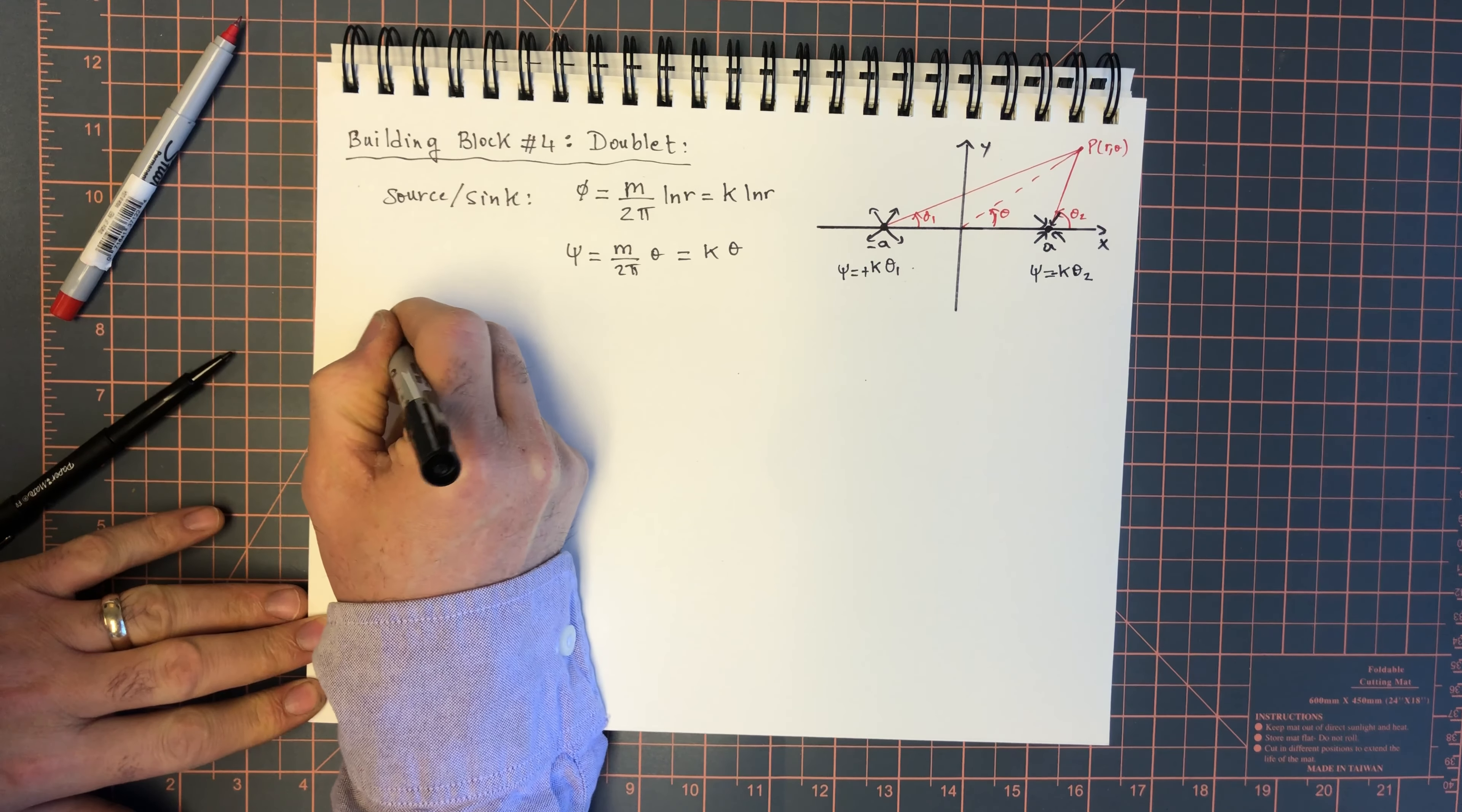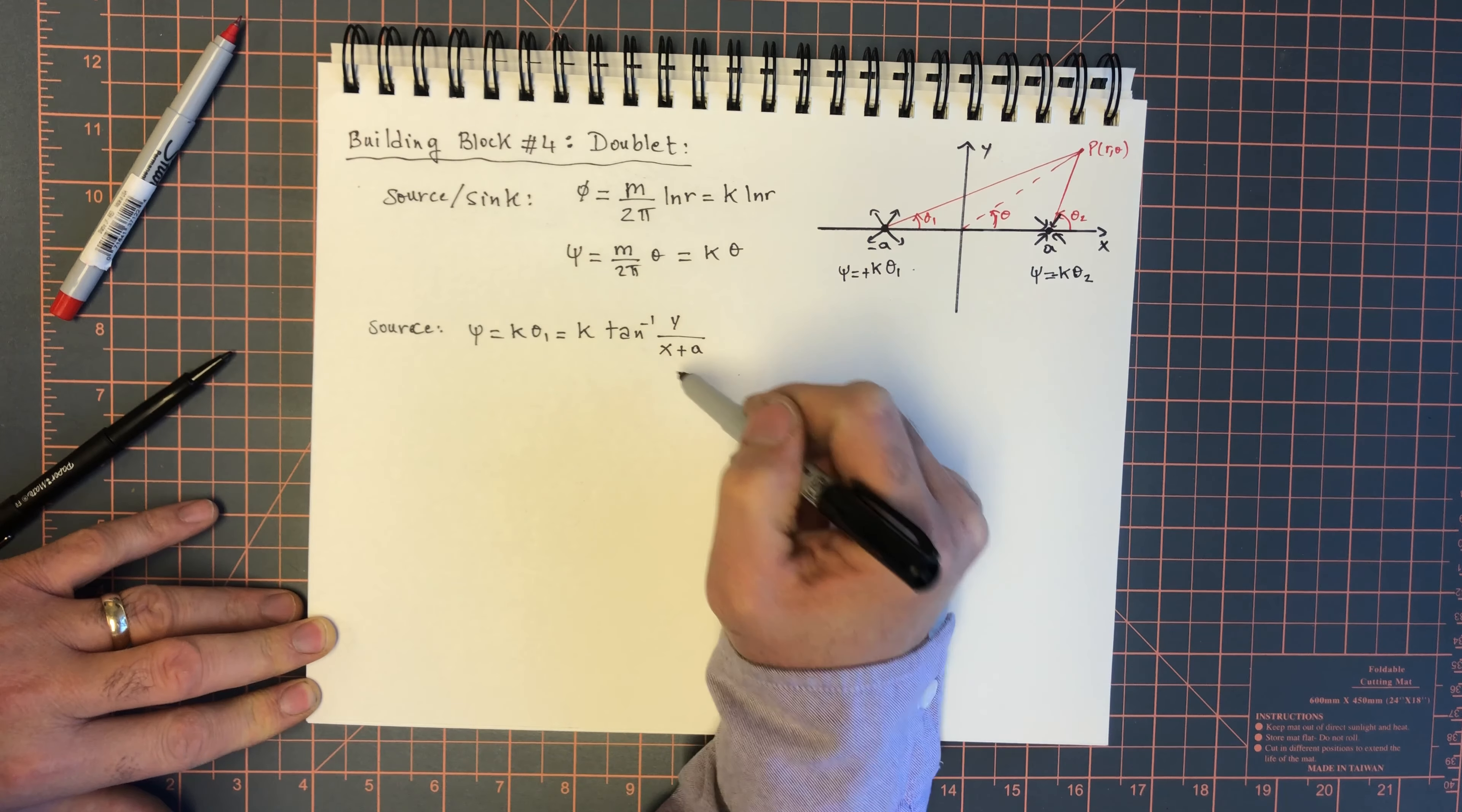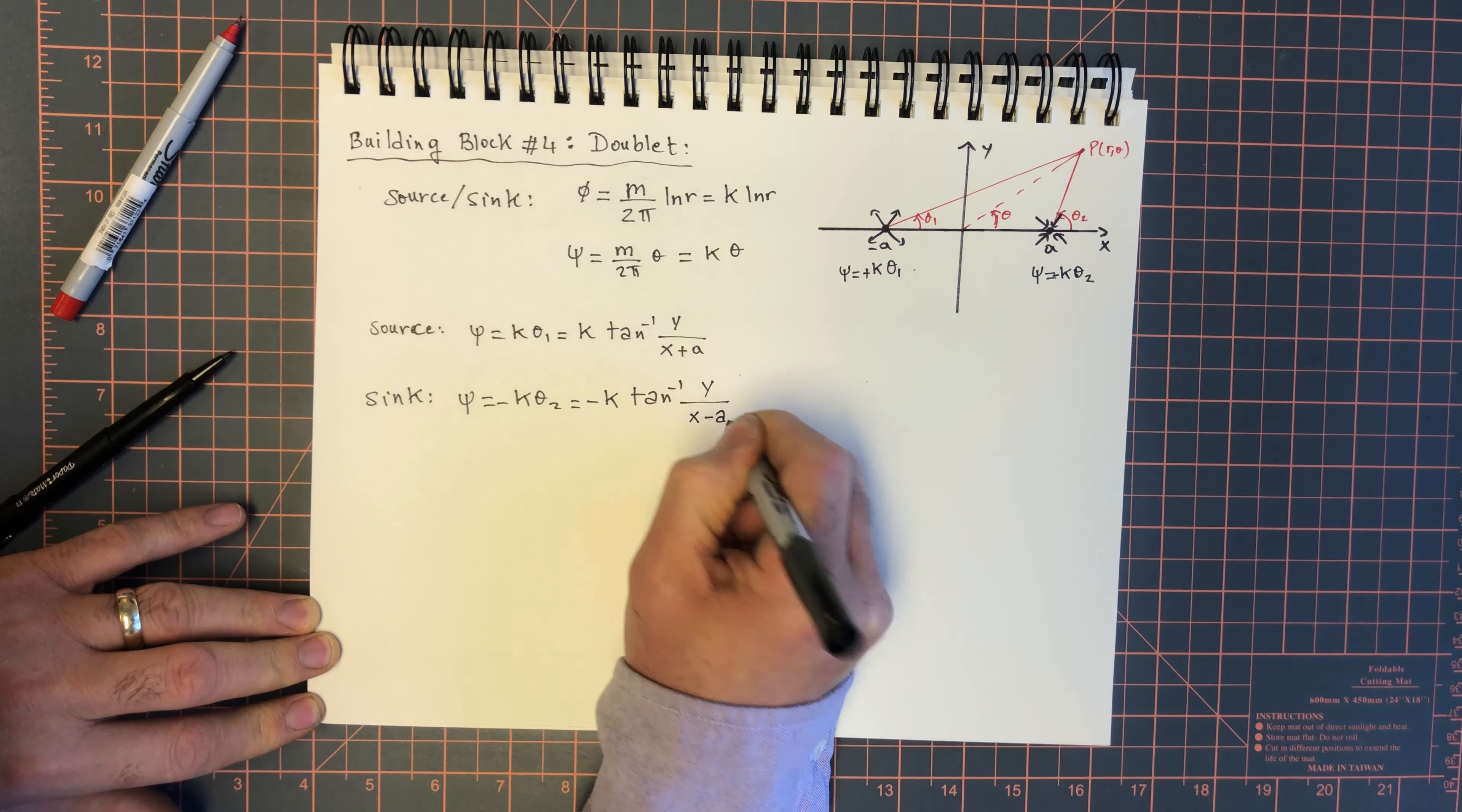In this case, psi for the source is k theta 1 and that's equal to k inverse tan of y over x plus a. If you remember the previous videos, we had an x minus a, and a in this case is negative a, so we get x plus a. And for the sink, we have psi equal minus k theta 2 and that's equal to minus k inverse tan y over x minus a.